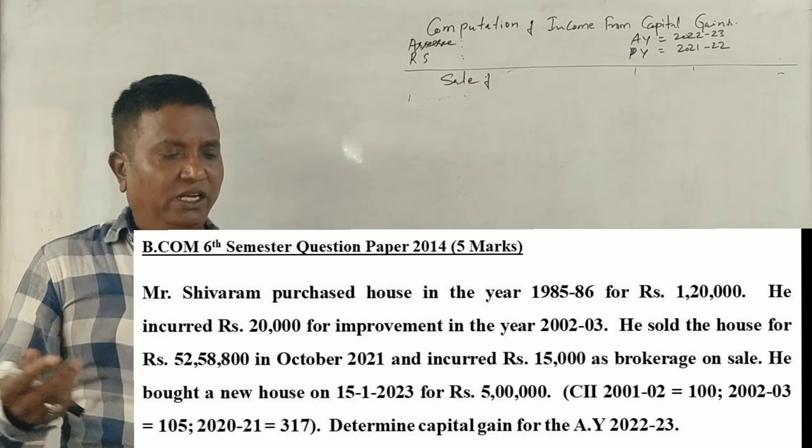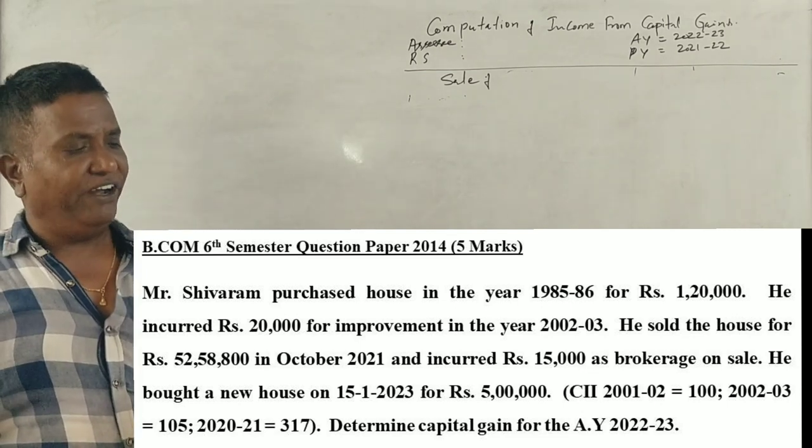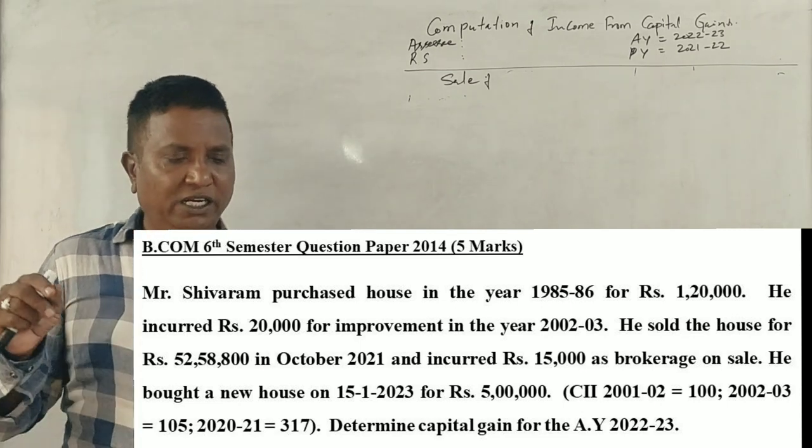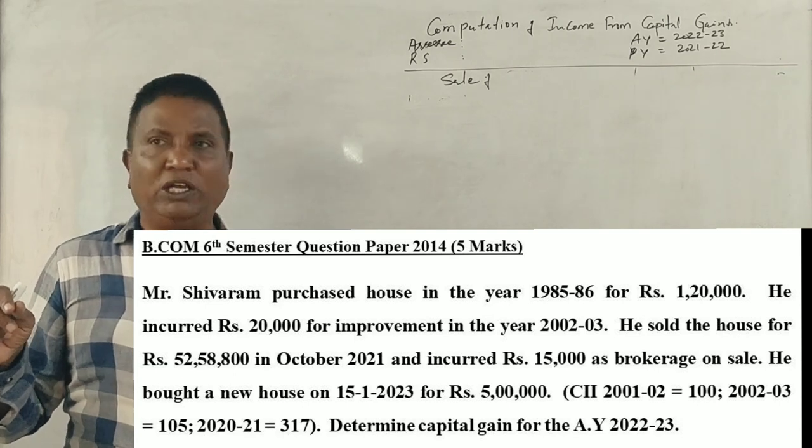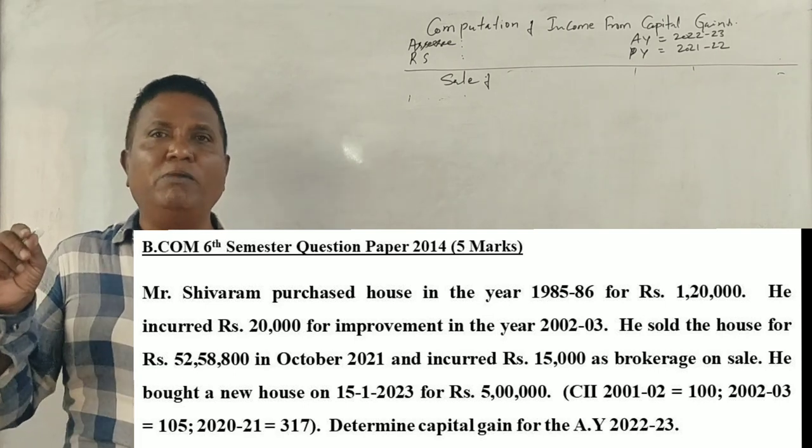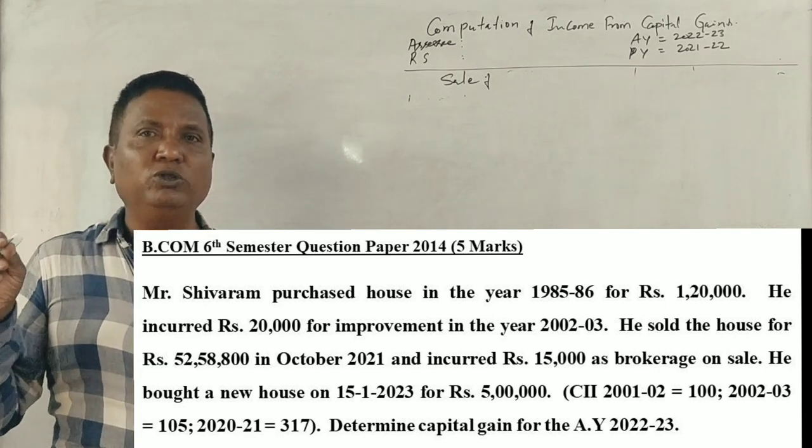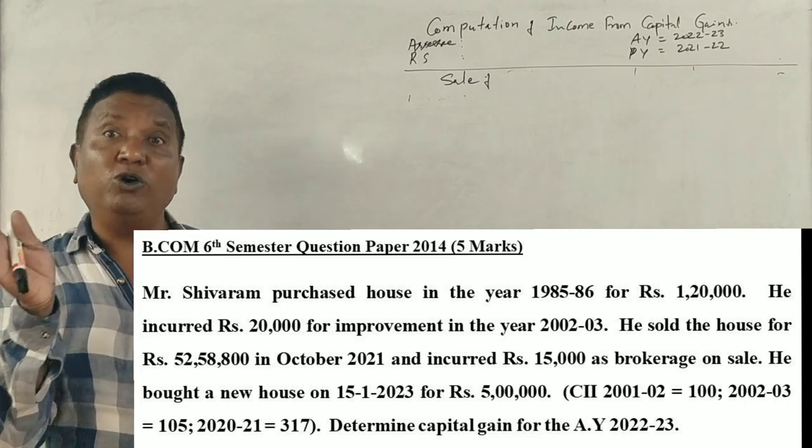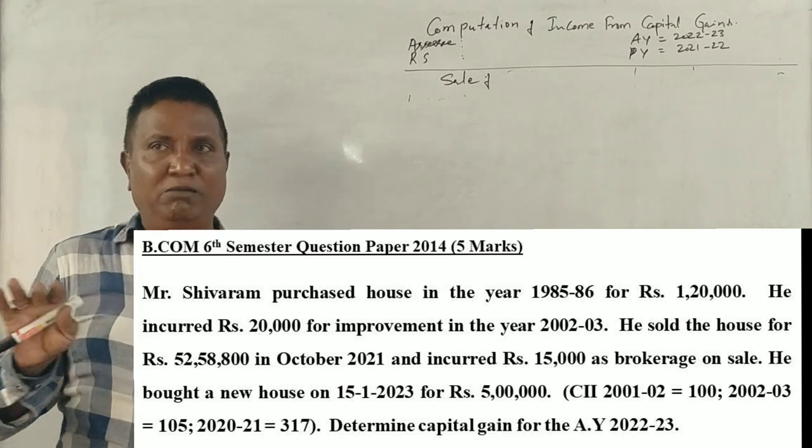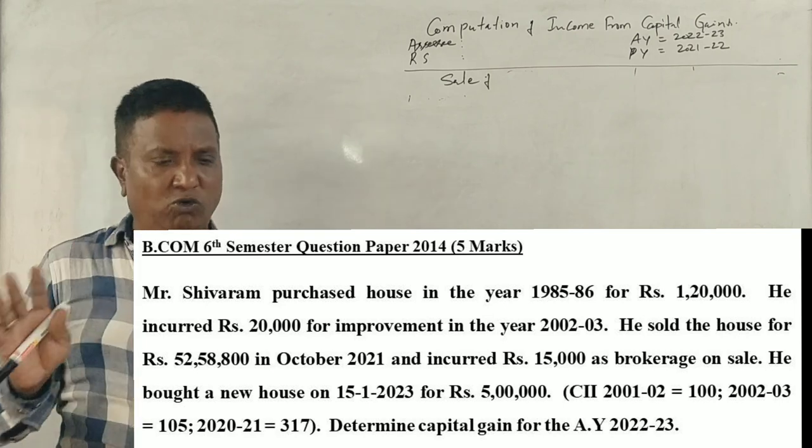He purchased the house for Rs. 1,20,000 in 1985-86. He incurred Rs. 20,000 for improvement in the year 2002-03. Now we have improvement before 2001-02, but after 2002-03.